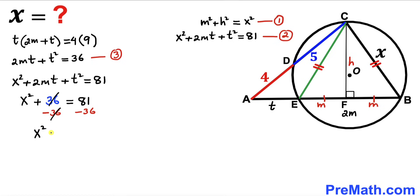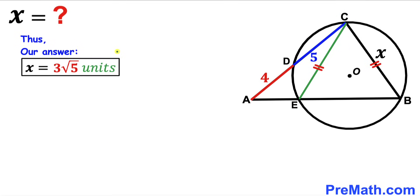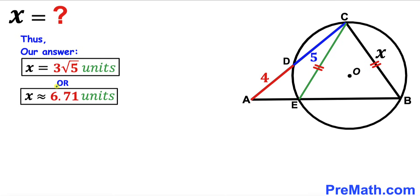Subtracting 36 from both sides, x² = 45. Taking the square root of both sides, x = 3√5 units, which is approximately equal to 6.71 units. That is our final answer.